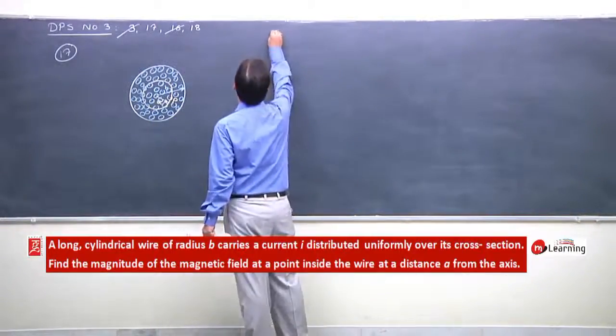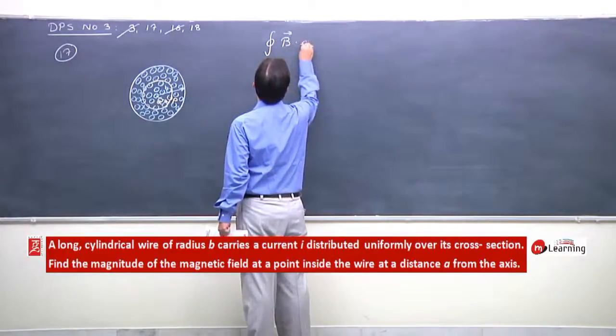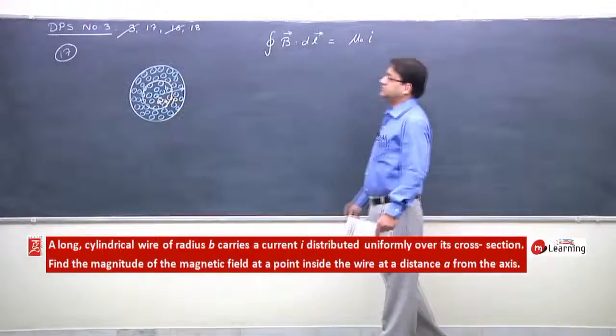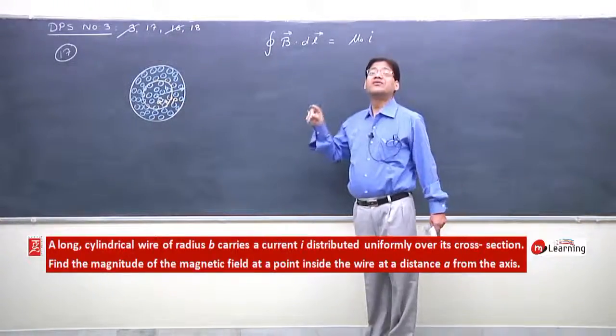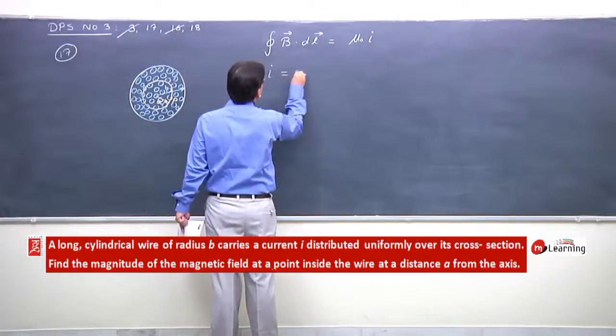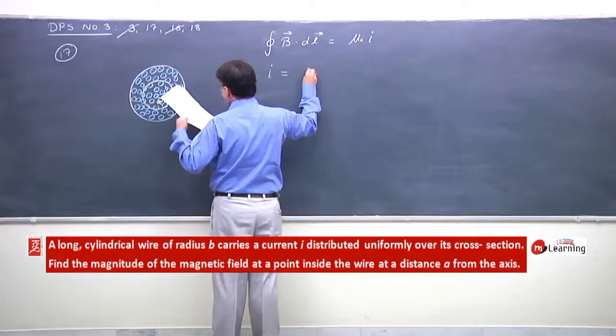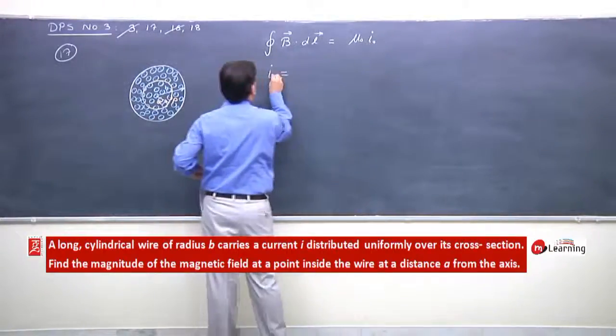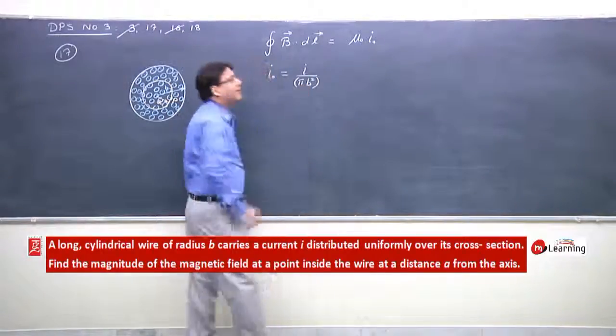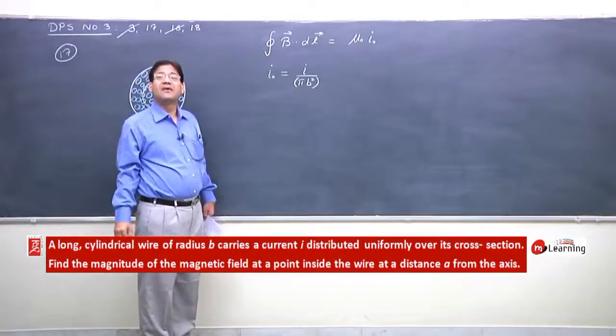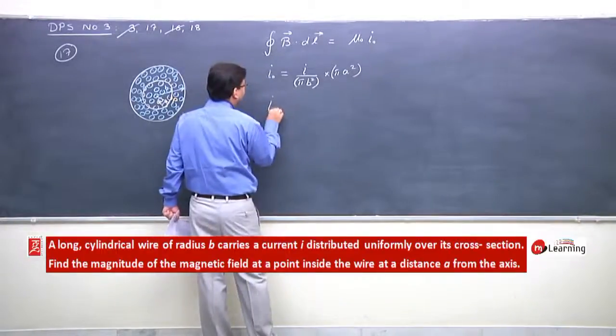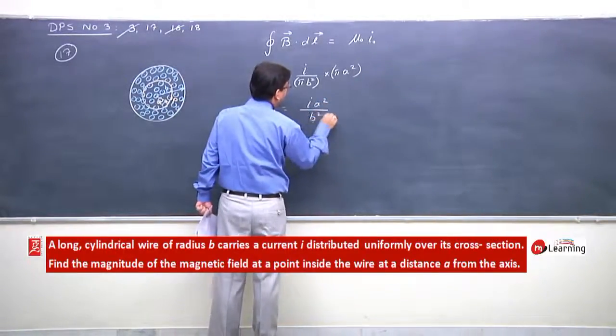Ampere's circuit law is integral of B dot dL equals mu naught i. First, for the loop we have taken, the total current inside this loop is: the current in the loop is total current I upon pi B square. Current is uniformly distributed over cross-section pi B square and the loop encloses area pi A square. So current in the loop is I pi A square by B square.